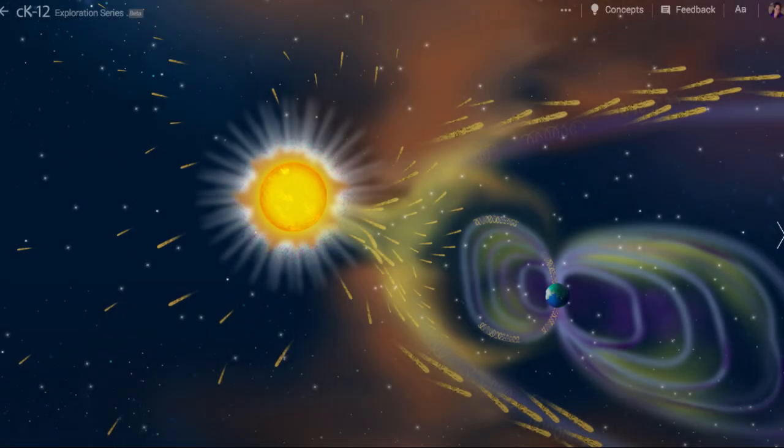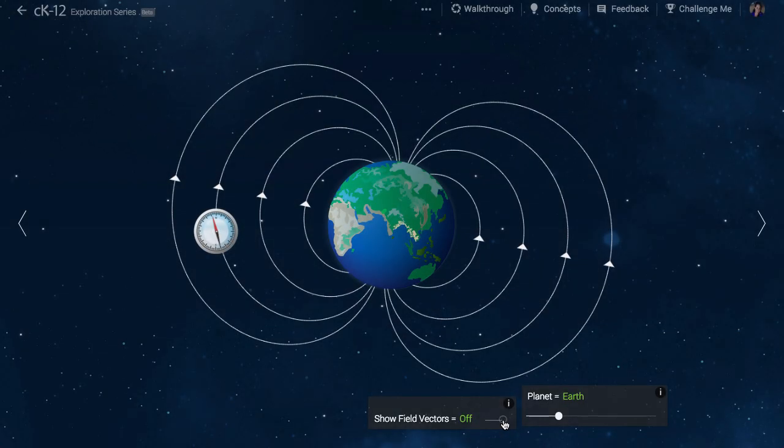When charged particles arrive from the Sun, they interact with the magnetic field. Forces applied to charged particles are at right angles to the field, so these particles spiral around the field lines.